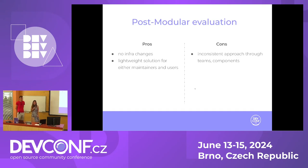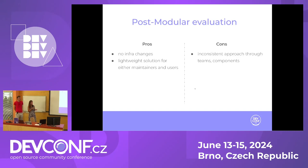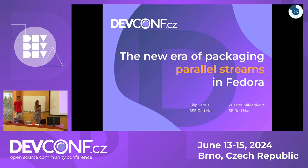The disadvantage is that this approach is inconsistent across teams and components in Fedora, because every component has different needs. For example, Node.js also uses compat packages but provides parallel installability because it is easier to do with Node.js packages due to their naming - and that is similar with Python. So this is a disadvantage that it is not the same for all Fedora packages - this solution is specifically for the databases components. Thank you very much for your attention and if you have any questions, please ask.